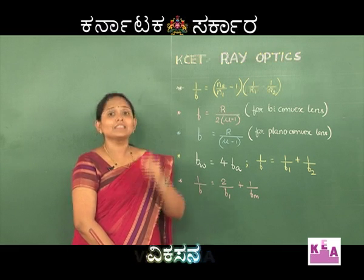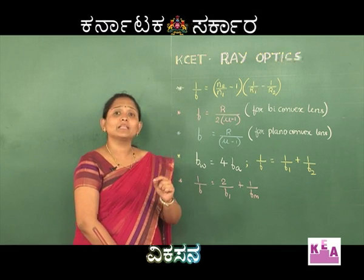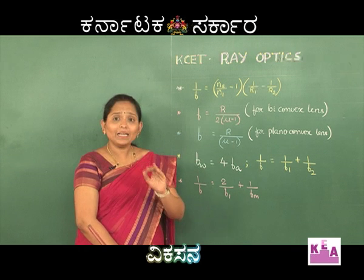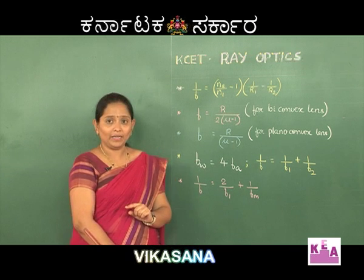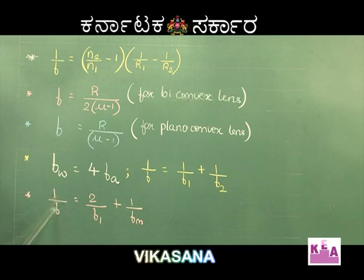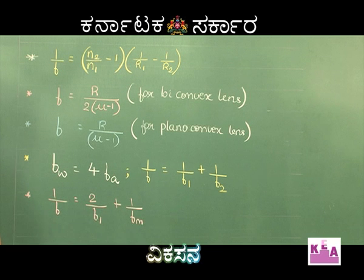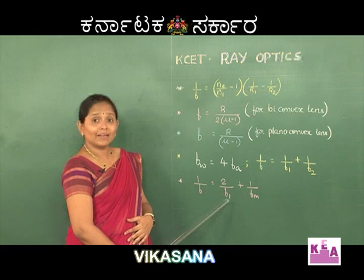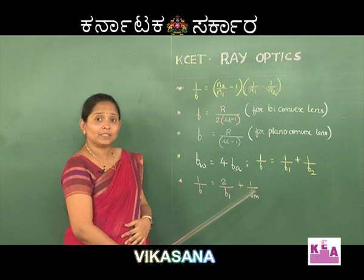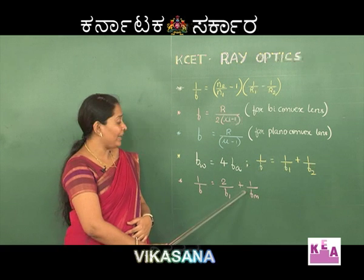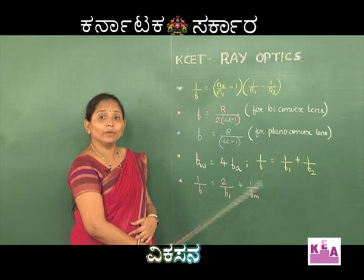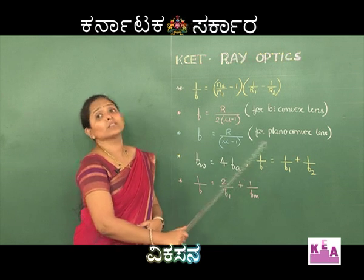When a lens is silvered, it behaves like a mirror. The focal length of such a lens is given by 1/f = 2/f1 + 1/fm. Here, f1 is the focal length of the lens where refraction takes place, and fm is the focal length of the mirror where reflection takes place.